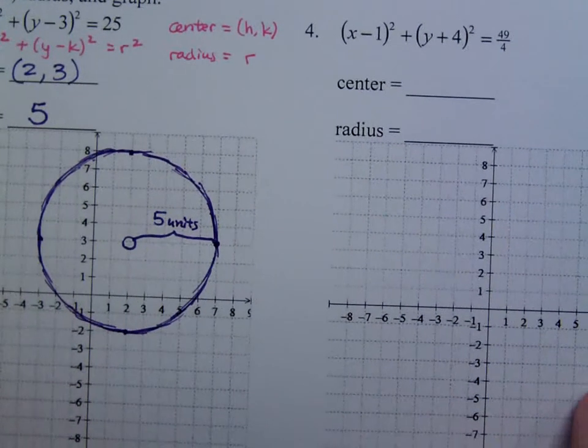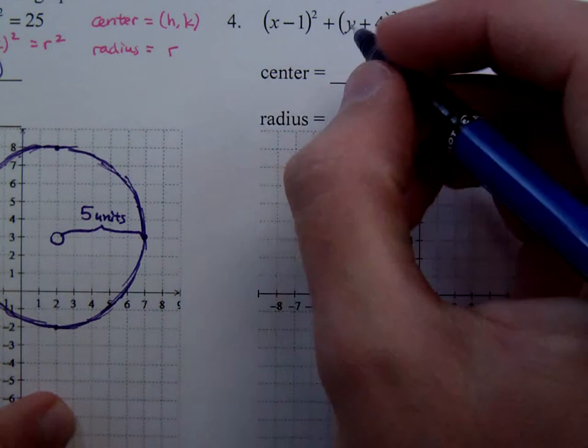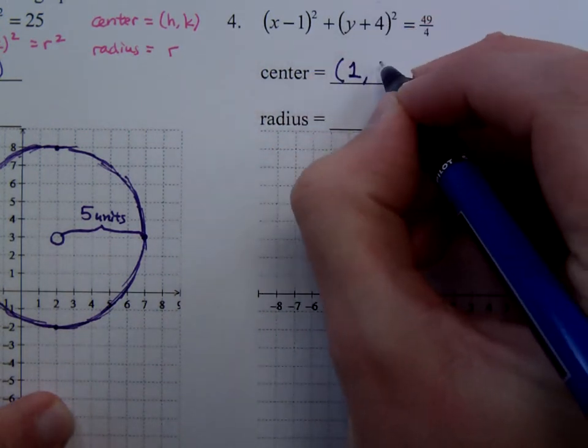So looking at number 4, in number 4, you're going to do the same kind of thing. The center, the opposite of what I see here, so that's going to be a positive 1. The opposite of what I see here, so that's negative 4.